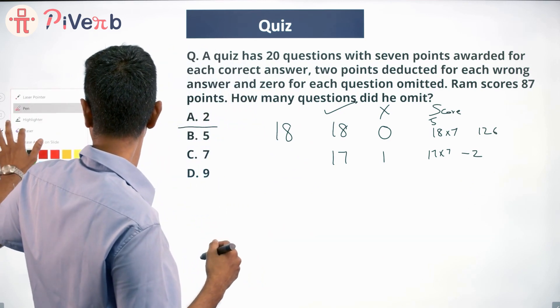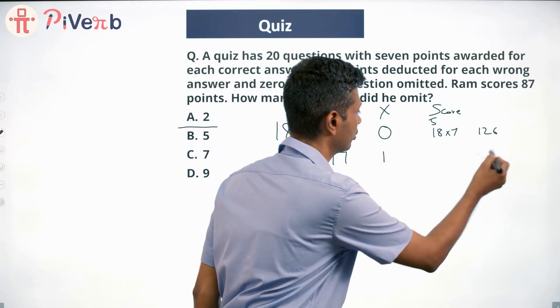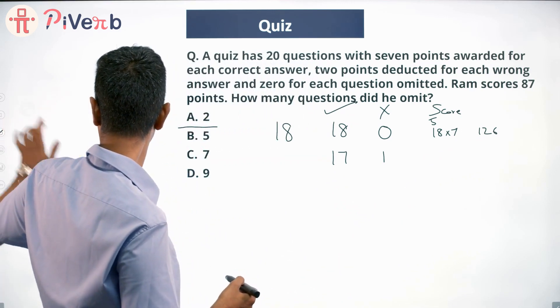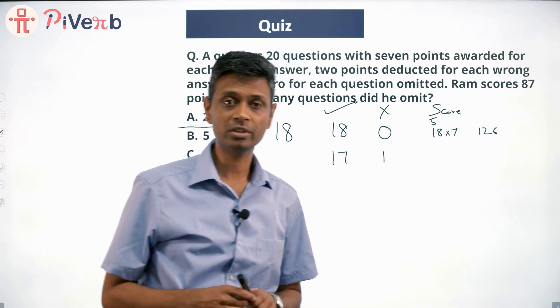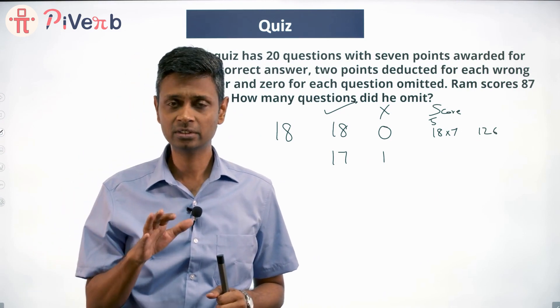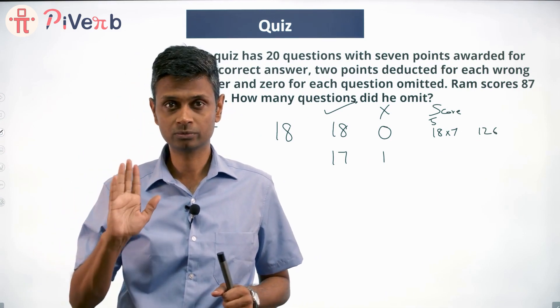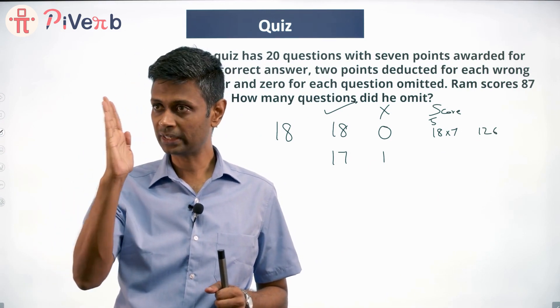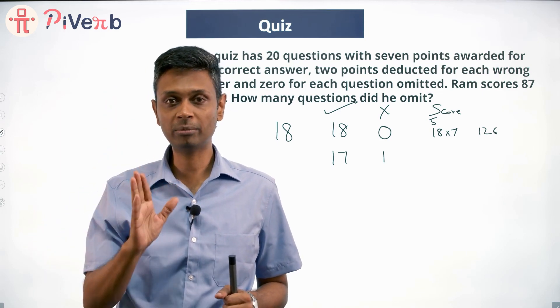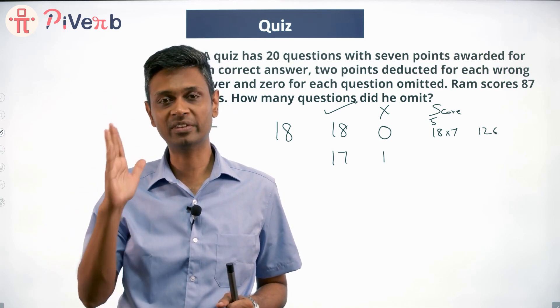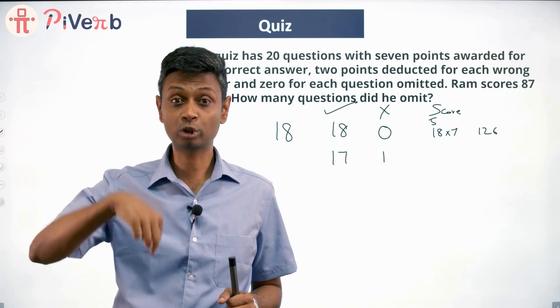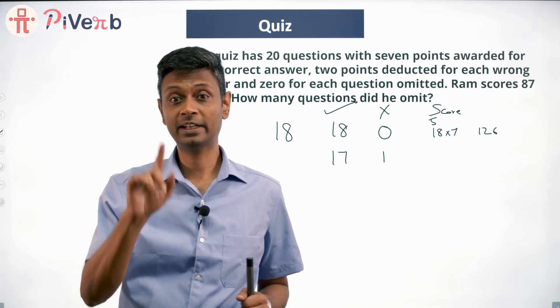I'm going to think of it beautifully as 18 questions. Instead of getting everything right, he gets one question wrong. That one question goes from right to wrong. What do I mean by that? Instead of getting plus 7, he gets minus 2, so the score falls by 9.